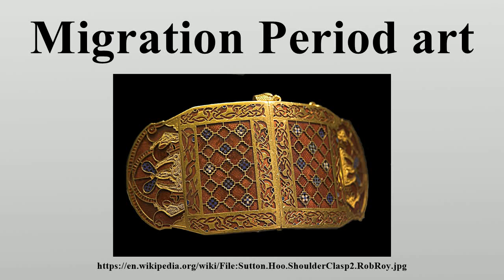Migration period art denotes the artwork of the Germanic peoples during the migration period. It includes the migration art of the Germanic tribes on the continent, as well as the start of insular art or Hiberno-Saxon art of the Anglo-Saxon and Celtic fusion in the British Isles. It covers many different styles including the polychrome style and the animal style. After Christianization, migration period art developed into various schools of early medieval art in Western Europe, classified by region, such as Anglo-Saxon art and Carolingian art, before the continent-wide styles of Romanesque art and finally Gothic art developed.